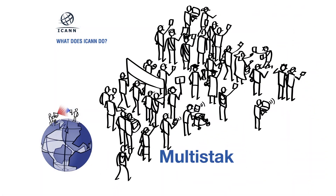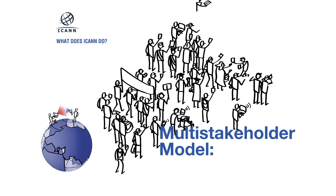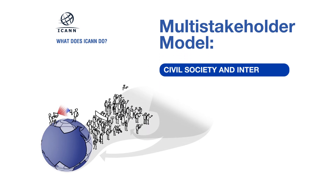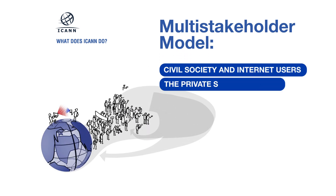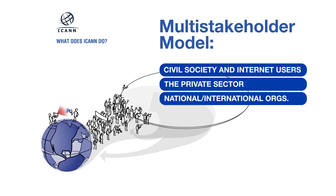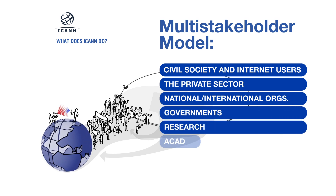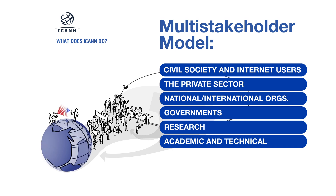Within ICANN's multi-stakeholder model, civil society and Internet users, the private sector, national and international organizations, governments, research, academic and technical communities are all represented.